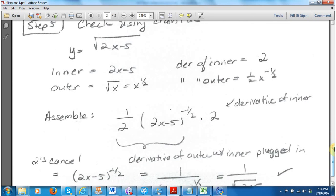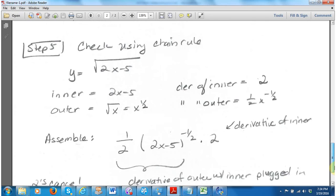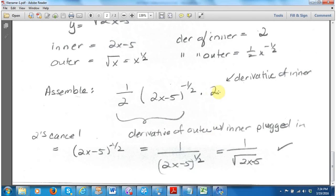Now we assemble this. The derivative is the derivative of the outer function with the inner plugged in times the derivative of the inner function. And I have everything outlined here so you can follow my work. If I simplify that, the 2s cancel out, and I'm just left with the 2x minus 5 to the minus 1 half power. By laws of exponents, that kicks it down to the basement.